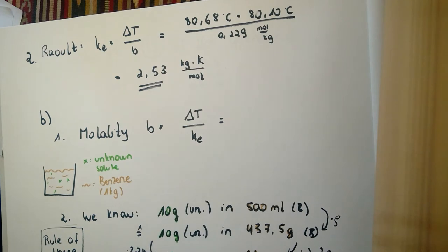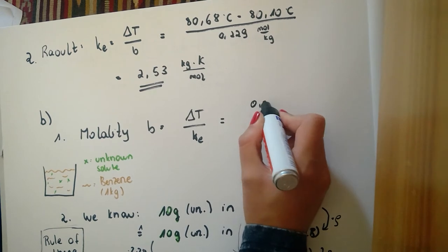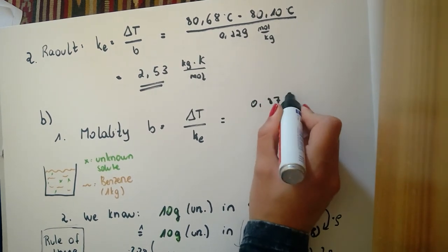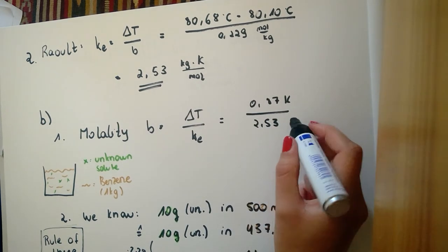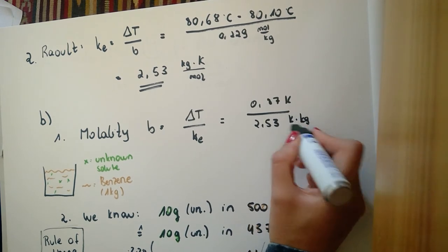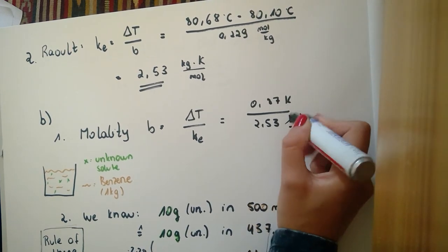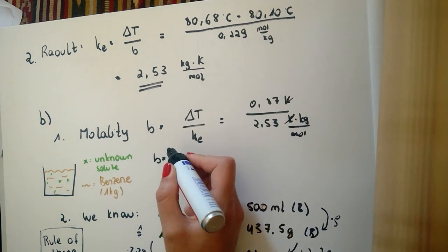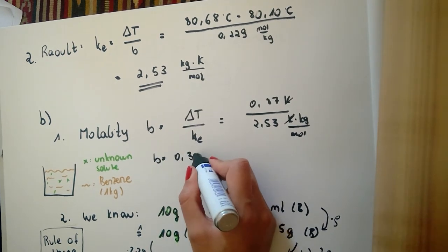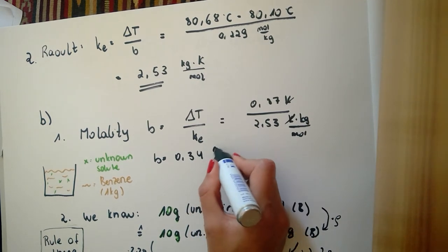Here we have 0.87 degrees or Kelvin as the temperature difference, and the constant with the unit Kelvin kilogram per mol. Our result for B is 0.34 mol per kilogram.